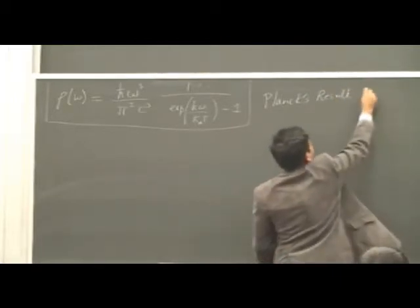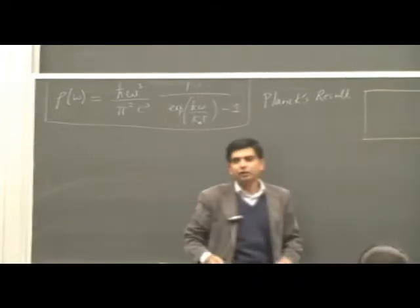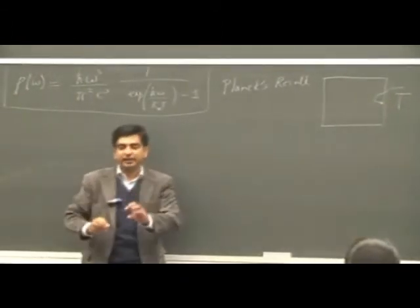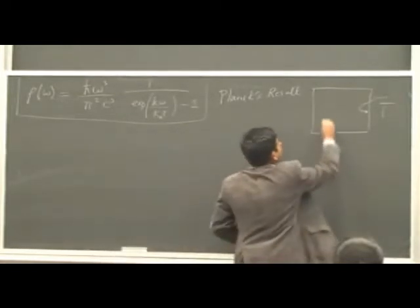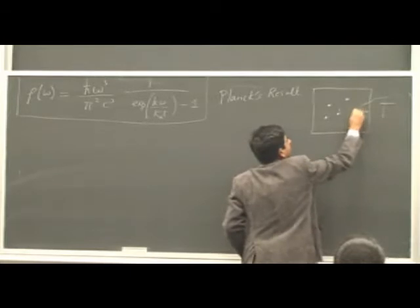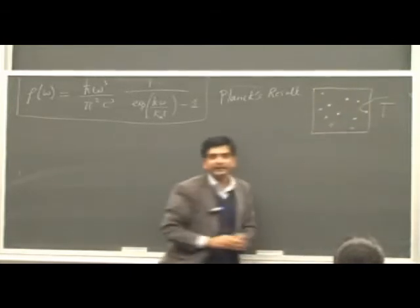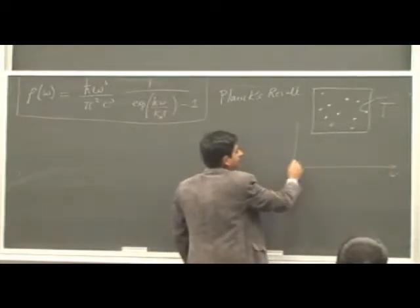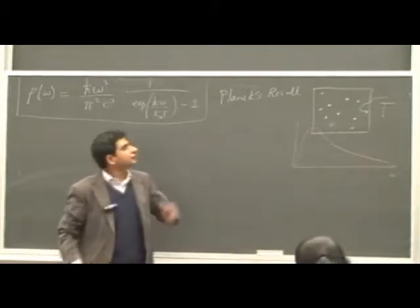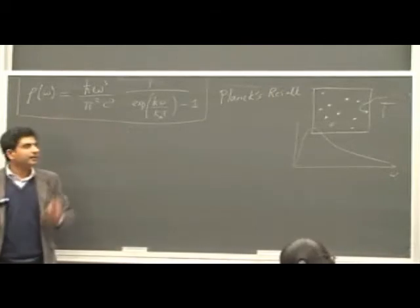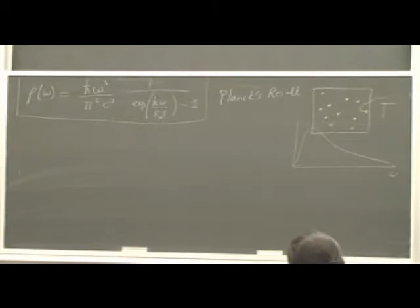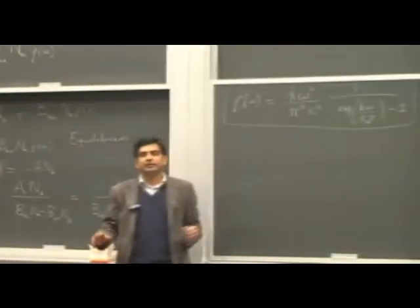What does this mean? This means you have a cavity — a box whose walls are at a temperature T. When the walls are at temperature T, they will emit radiation, so there will be photons inside the cavity. These photons carry a certain energy, which means there will be a spread of omegas. This expression tells you the energy density at frequency omega at temperature T. This is Planck's result, and this is Einstein's result — dynamical equations based upon absorption and emission. The two must match.